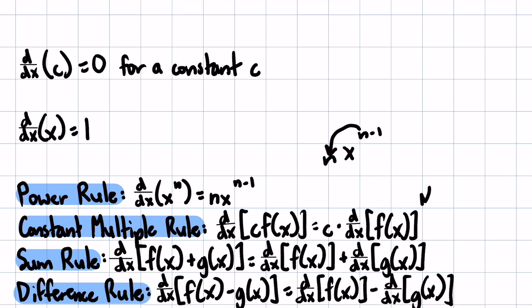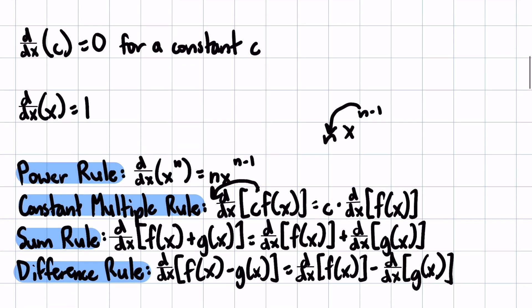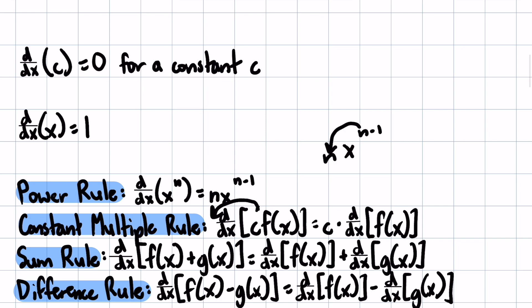Next is our constant multiple rule, and so what this essentially says is that if we have a constant inside the derivative, we can just bring it out front. And then the sum and difference rules just state that we are able to basically split the derivative over addition or subtraction into two separate derivatives.